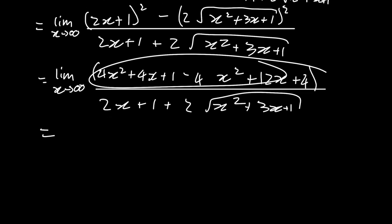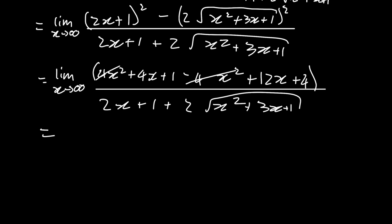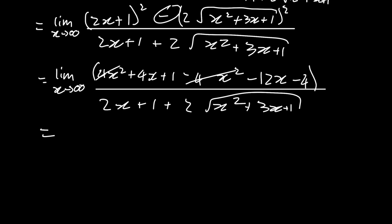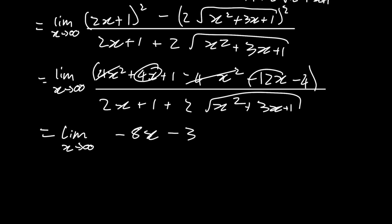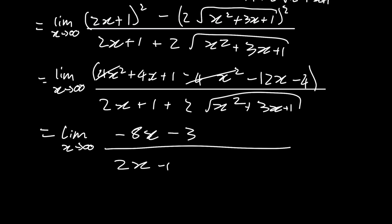Further simplifying the numerator, those 4x squared terms cancel out. Note that we distributed a negative, so it's plus 1 and then minus 4x squared, minus 12x, minus 4. So I get the limit as x approaches infinity of negative 8x minus 3: that 4x and negative 12x give negative 8x, and that 1 and negative 4 give negative 3. Still over the same denominator.